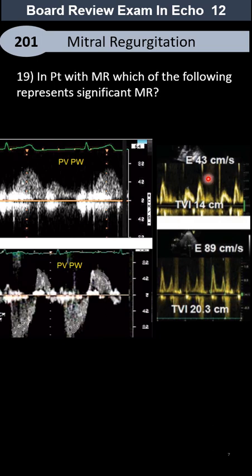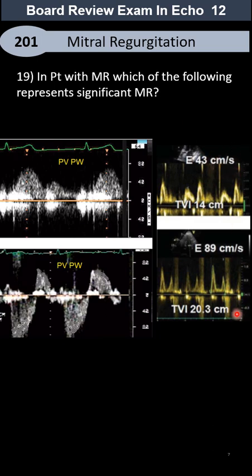And two others belong to the mitral valve inflow. VTI and TVI are both the same — velocity time integral or time velocity integral. TVI is the European term and VTI is the American term. You have to look at the numbers — EV max — and here the pattern of the pulmonary vein.